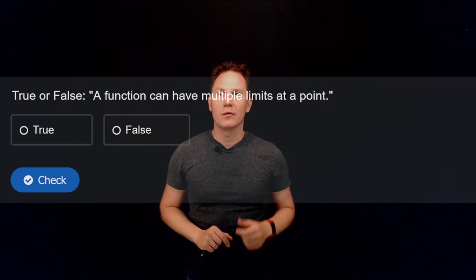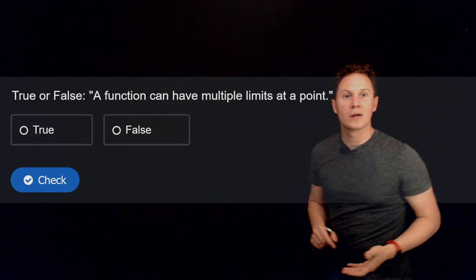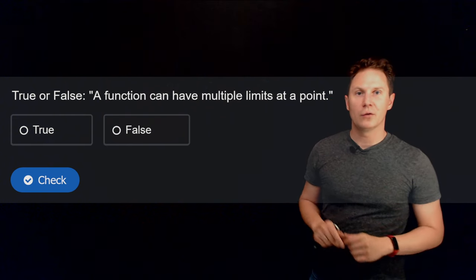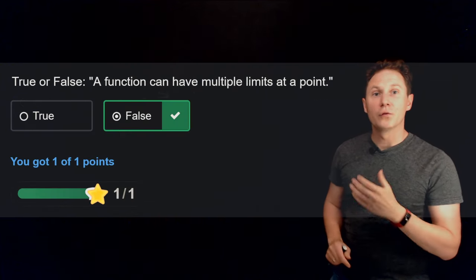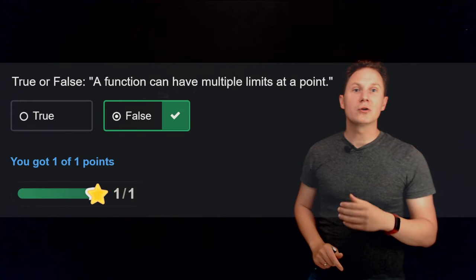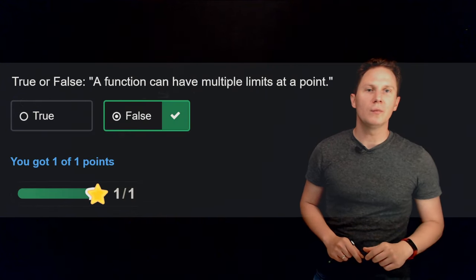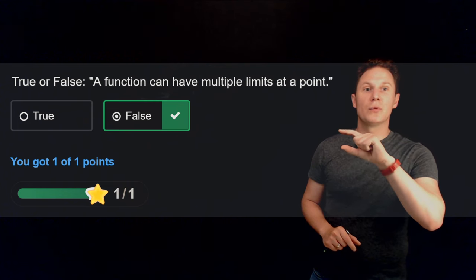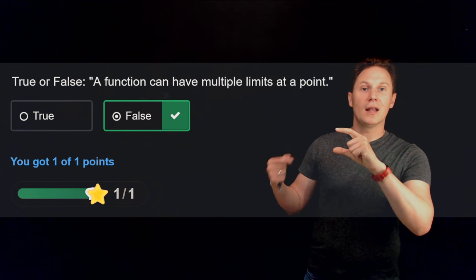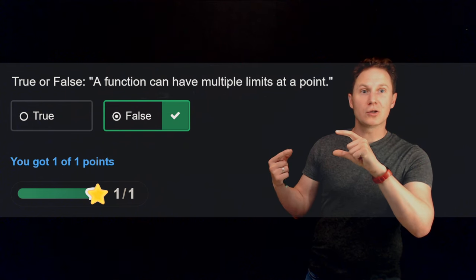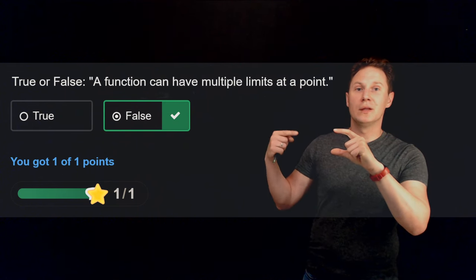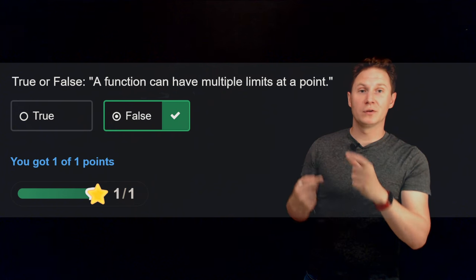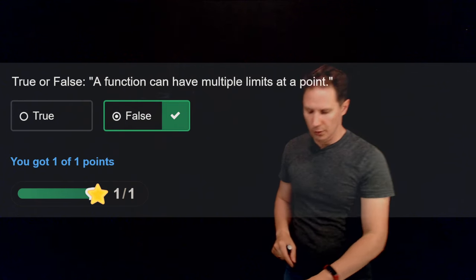Is it true or false that a function can have multiple limits at a point? It's false. A function cannot have multiple limits at a point, because if it had two distinct numbers for a limit, then by definition f(x) would need to get arbitrarily close to both of those numbers simultaneously, which is not possible.